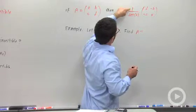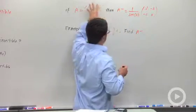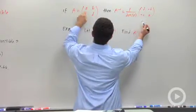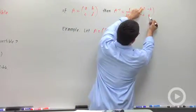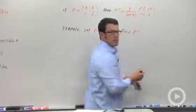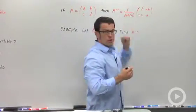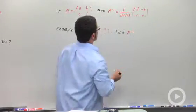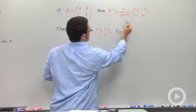then its inverse is 1 over the determinant of matrix A times this matrix. And notice the difference: A and D have switched, and B and C have taken their opposites. So along the main diagonal, you just switch the entries on the main diagonal and you take the opposites of the other entries. Don't forget to multiply by the 1 over the determinant.